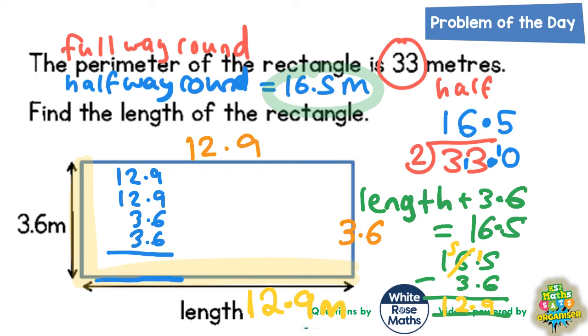Well, 9 plus 9 is 18, plus 6 is 24, plus another 6 is 30. Put the 0 in, carry the 3. 2 plus 2 is 4, plus 3 is 7, plus 3 is 10, plus the 3 that I just carried is 13. Put the 3 in, carry the 1. And 1 plus 1 is 2, plus the 1 that I just carried is 3. Don't forget the decimal point. So all four sides added together makes 33.0 metres, which is exactly what it says in the question at the top. So we must have found the correct length. It must be 12.9.